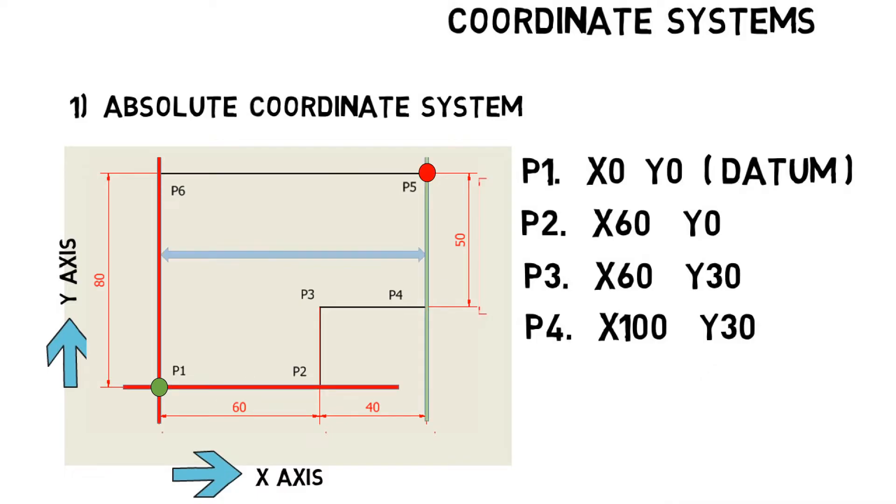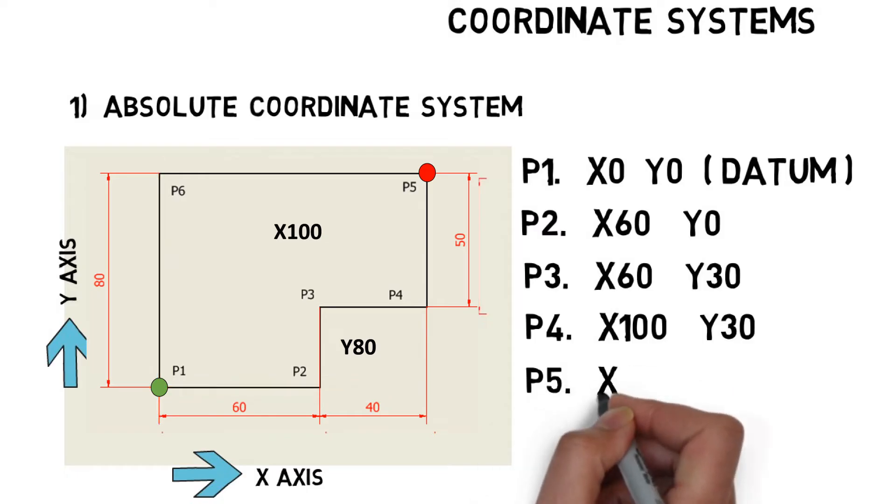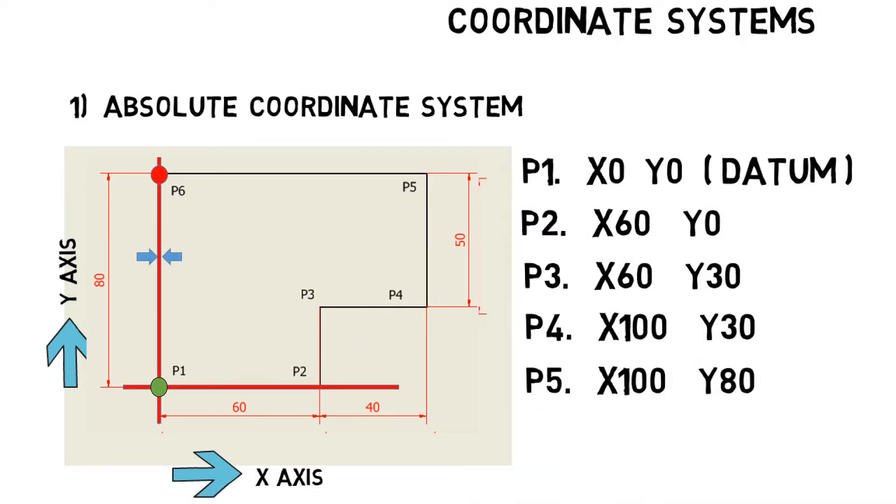Then P5, X distance is same 100 and Y is 80 here. Finally, P6, there is no movement in X, so X0 and Y is 80.